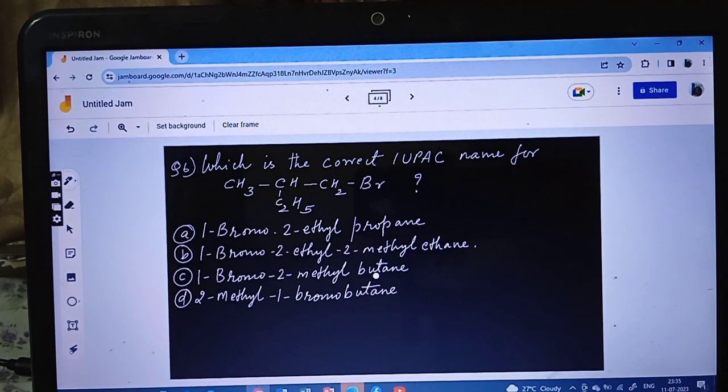Question number 6. Which is the correct IUPAC name for this compound? CH3-CH(C2H5)-CH2Br. Now let's try to open this chain. We'll try to find the longest carbon chain. So we can write the molecule as CH3-CH(CH2CH3)-CH2Br. Now we need to do numbering. You can see Br is there. So we'll find the longest carbon chain: 1, 2, 3, and 4. We get longest carbon chain - butane, saturated, and Br is in first position.